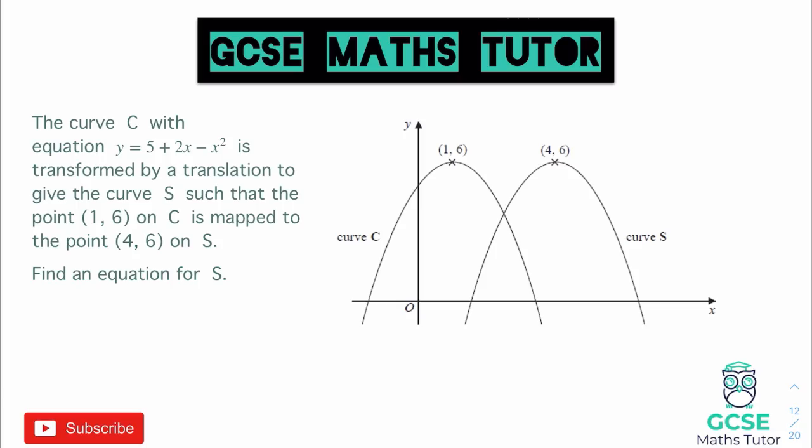Let's have a look at this question. It's quite a tricky question, but we'll read through it and see how we get on. It says the curve C with equation y equals 5 plus 2x minus x squared is transformed by a translation to give the curve S. You can see that curve C has moved to the right — the height hasn't changed, going 6 and 6 on the y coordinate, it has just gone to the right. It says the point 0.16 on C is mapped to the point 0.46, and it wants us to find an equation for S.